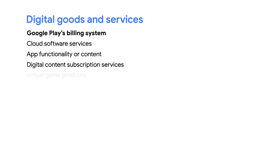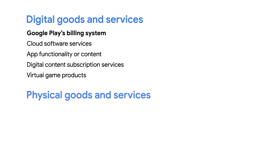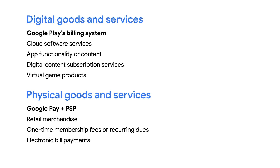Google Play's billing system is required when you're selling digital items or services within an app on Google Play, while Google Pay can be used when you're selling physical items or services that will be used or delivered outside of your app, such as groceries, retail merchandise, or food delivery. Note that you can use Google Pay to make payments easier in your application, regardless of whether your app is listed on Google Play or somewhere else.